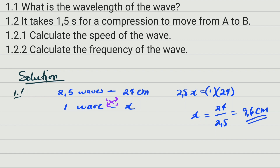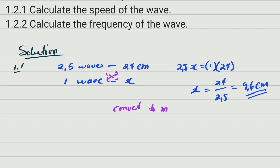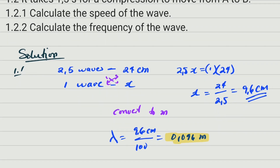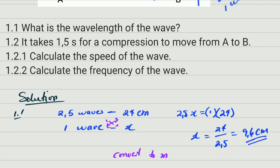If you want to convert to meters, take that answer and divide by 100. So the wavelength equals 9.6 cm ÷ 100 = 0.096 meters. The question doesn't specifically ask for meters, but the SI unit of wavelength is the meter, so it's good to know how to convert. That was the first part of question one — quite simple.